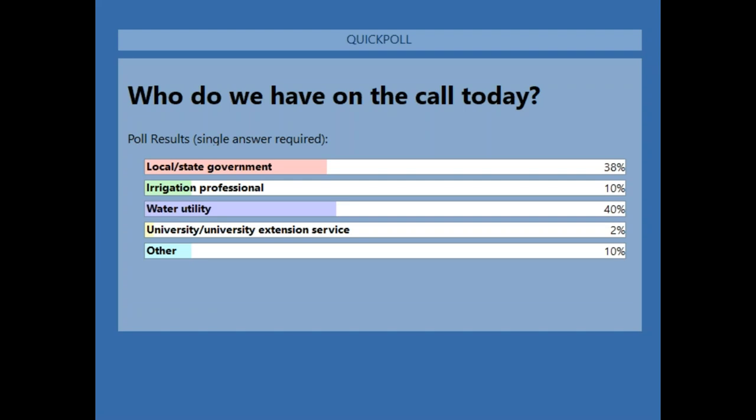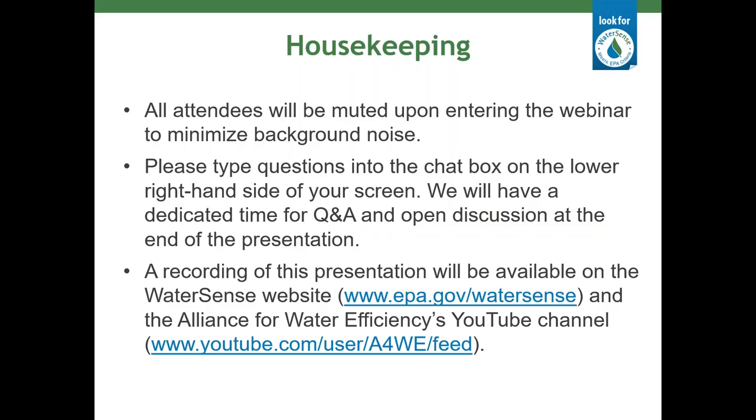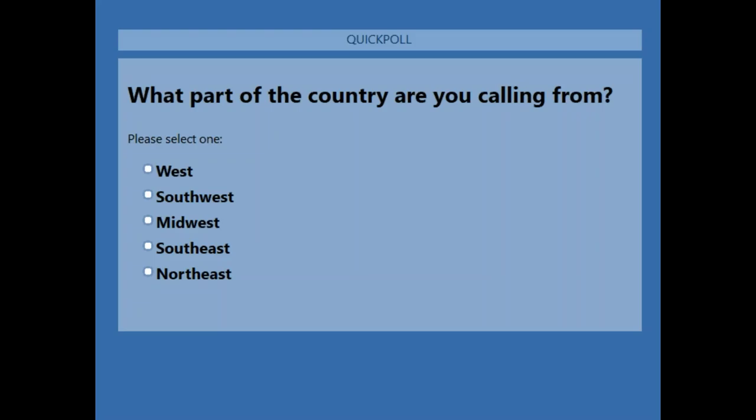It looks like we have about 40% from water utilities, 38% from local state government, and then about 10% irrigation professionals and 10% other. We're also looking for what part of the country you're calling from — give you all a couple seconds to answer that.